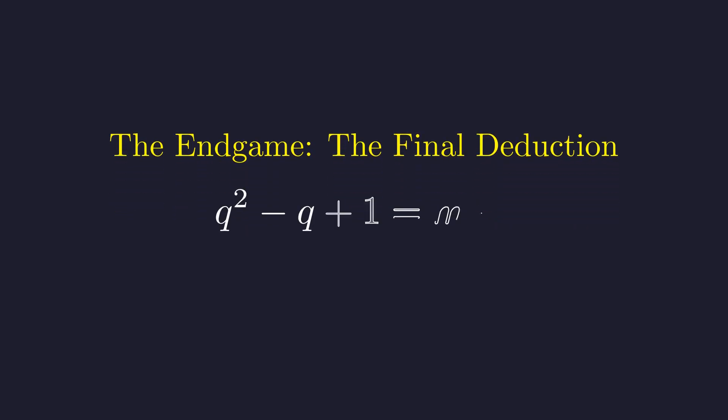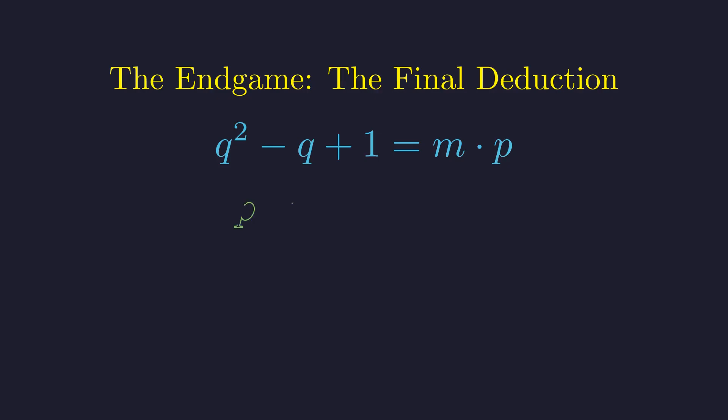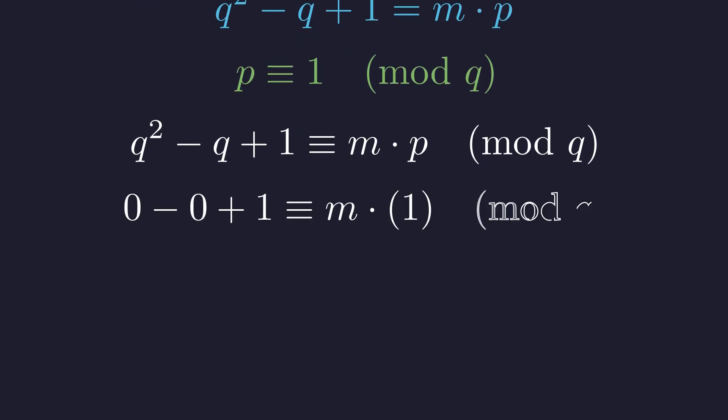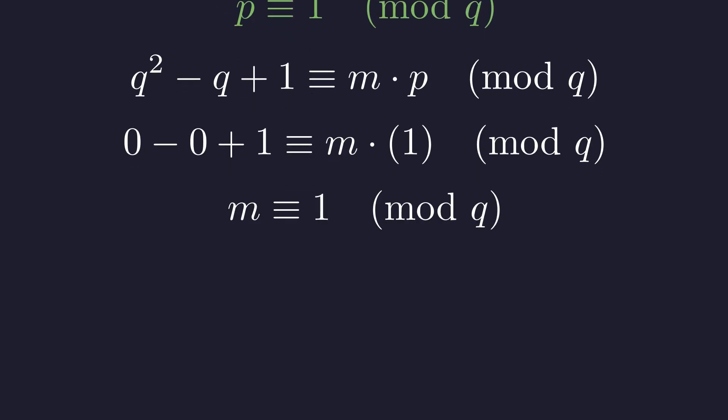Now we will combine our remaining constraints to determine the solution. From this divisibility condition, we can write q squared minus q plus 1 equals m times p for some positive integer m. Now, we will use our other constraint, that q divides p minus 1. This is most effectively applied using modular arithmetic on this equation. The condition that q divides p minus 1 is equivalent to saying p is congruent to 1 modulo q. We will now reduce the equation for m and p modulo q. On the left side, q squared and q are both congruent to 0 modulo q. On the right side, p is congruent to 1 modulo q. The equation simplifies significantly. This shows that m must also be congruent to 1 modulo q.